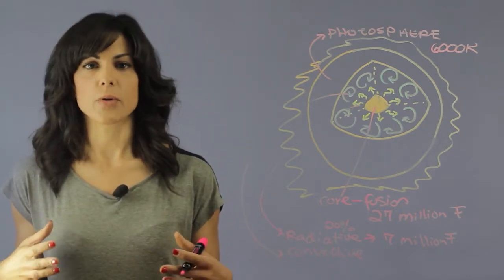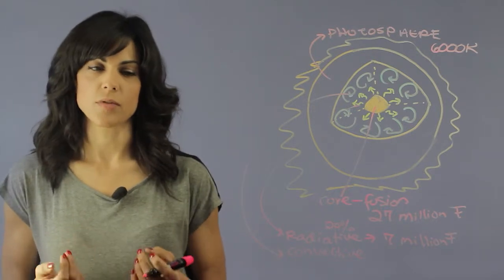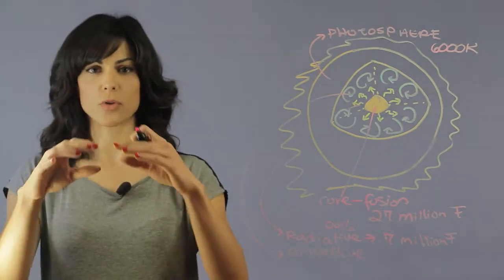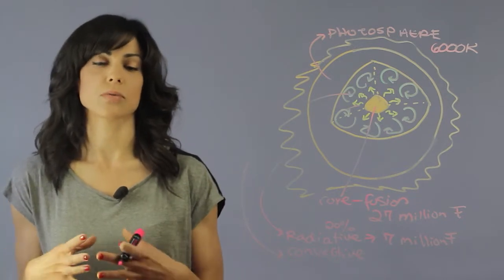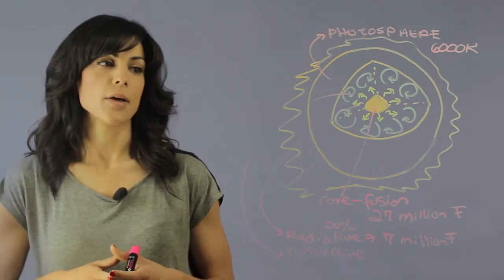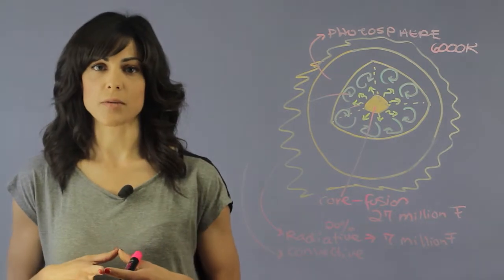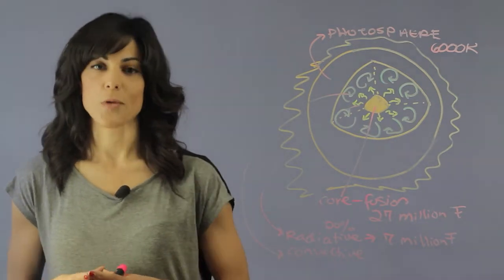After that we have what we consider sort of the atmosphere of the Sun. We have the chromosphere which is sort of like a red outer edge, and then we have the corona which is responsible for the solar wind. But most of the visible light that is emitted from the Sun comes from the photosphere.